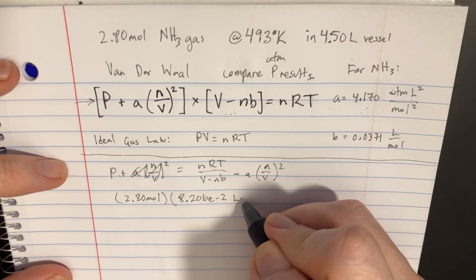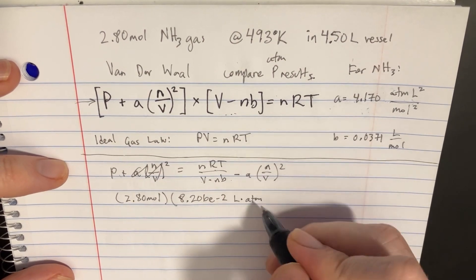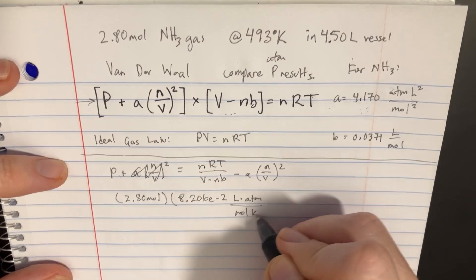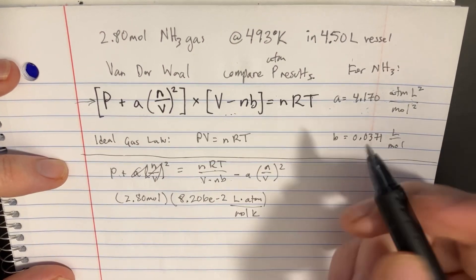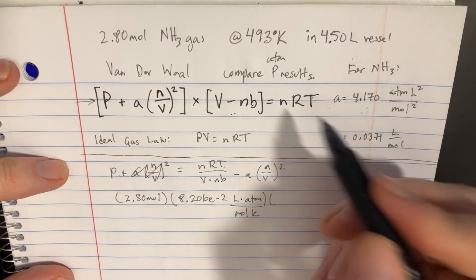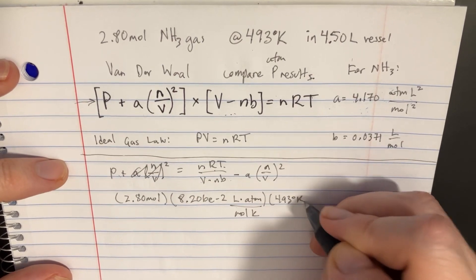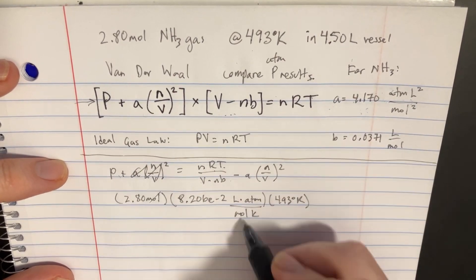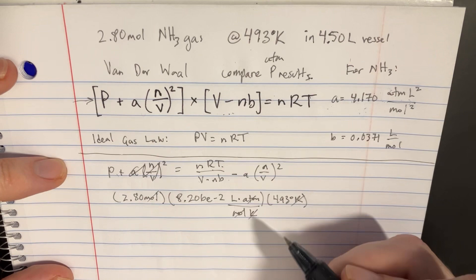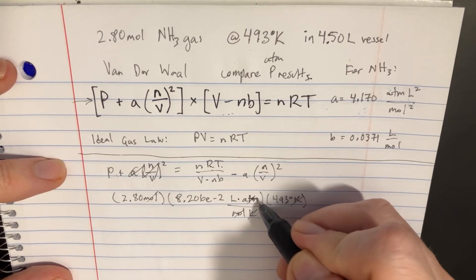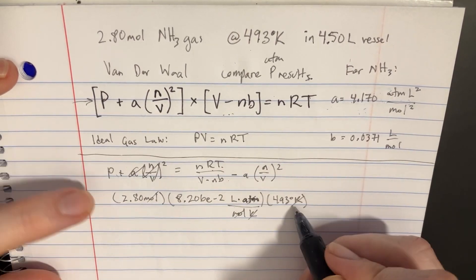And this has units of liters times ATM, and then we'll put mole and K at the bottom here. And then we're going to finish that with the temperature which was 493 degrees Kelvin. The cool thing is the moles here will cancel and the Ks will cancel.